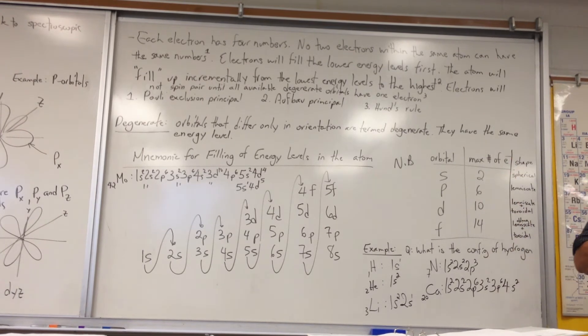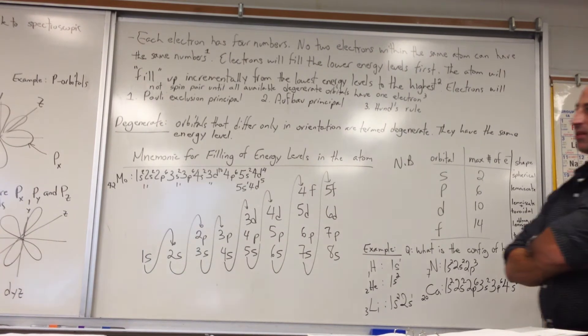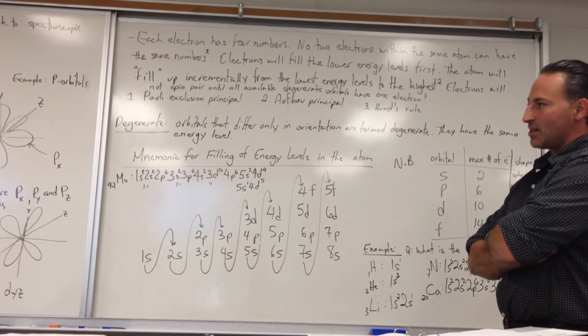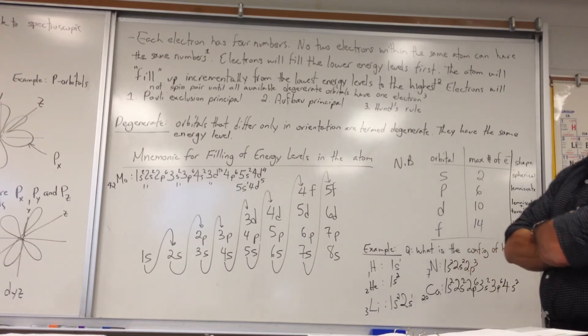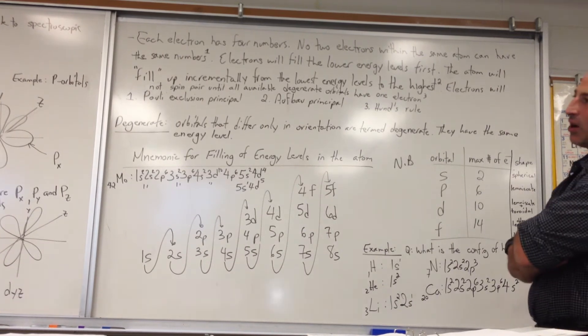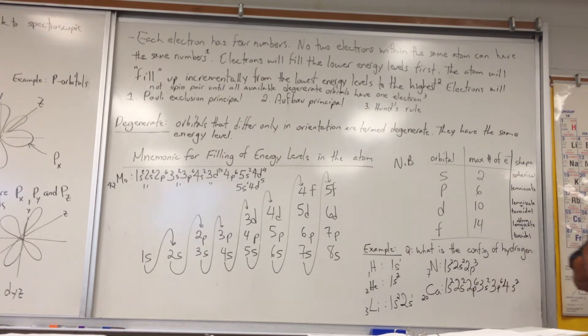That's why it splits the spectrum into three lines instead of the one line. That's what we call the Zeeman effect. The anomalous Zeeman effect is explained by the fact that the electrons are also spin paired sometimes. The last two quantum numbers are visible with the Zeeman effect, M sub L and M sub S.